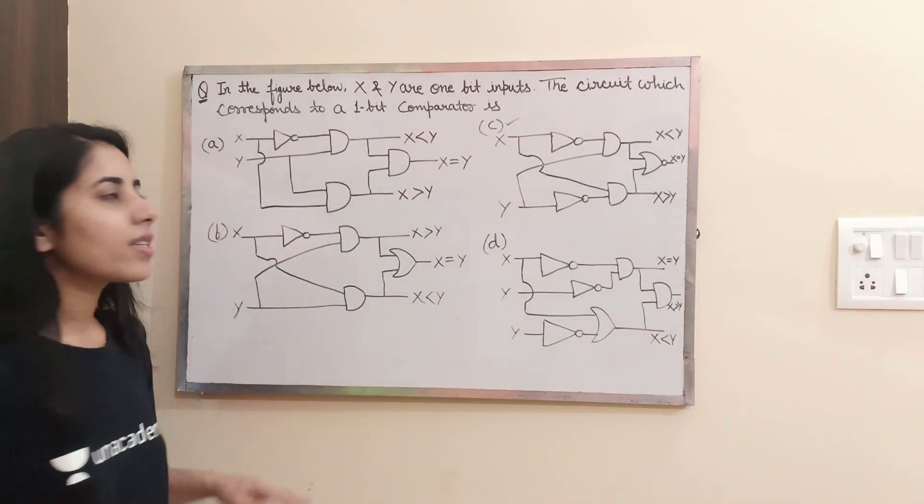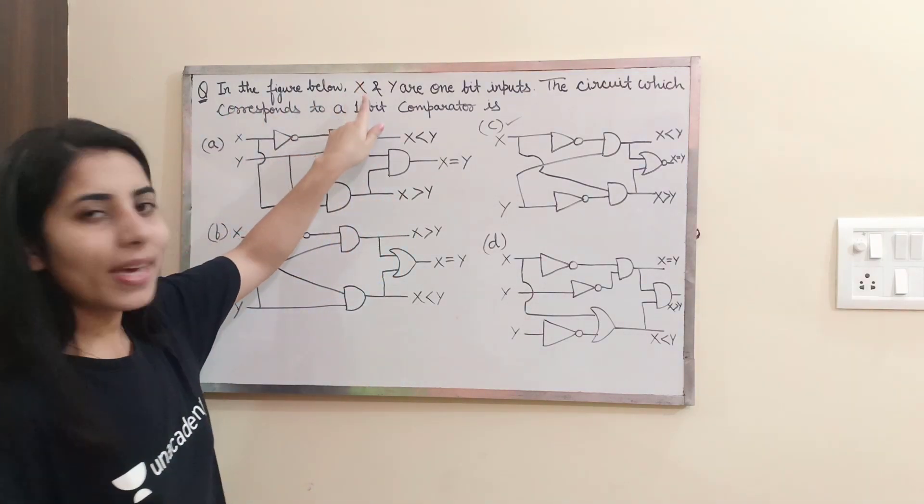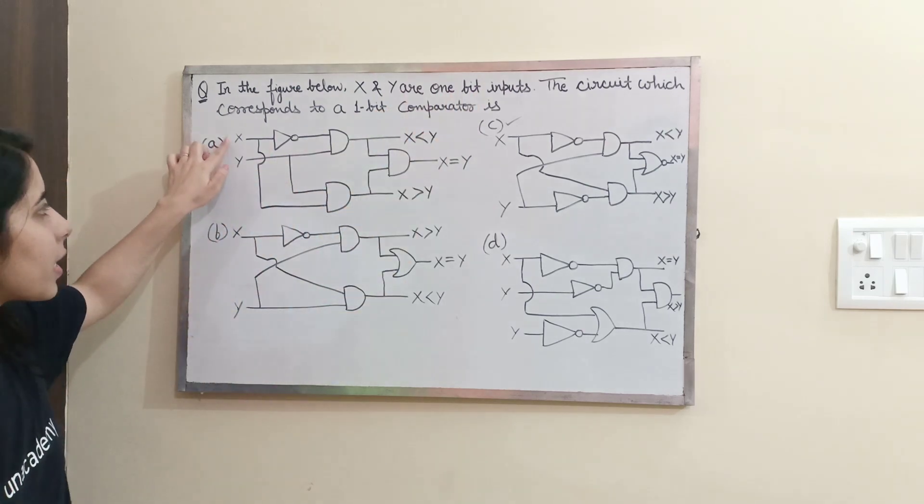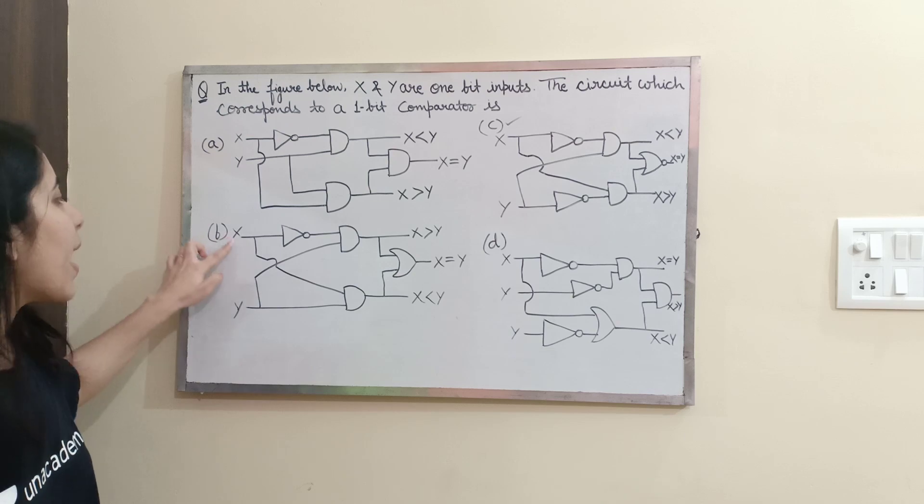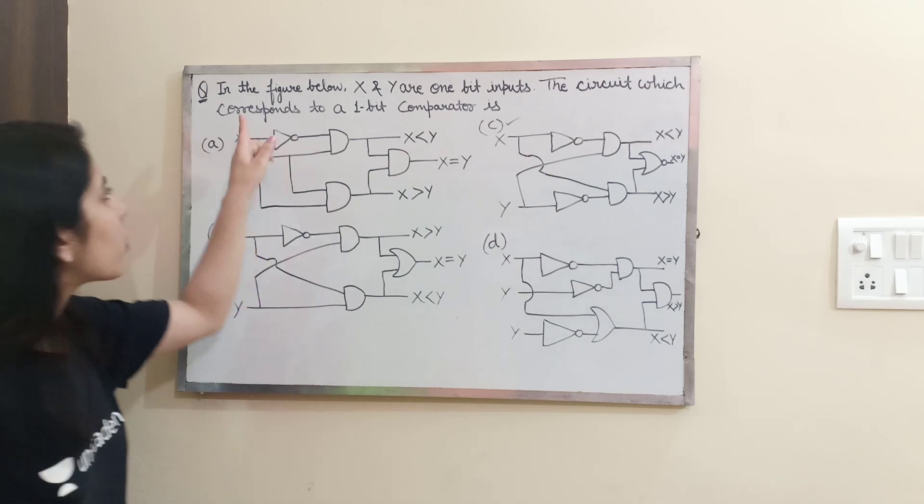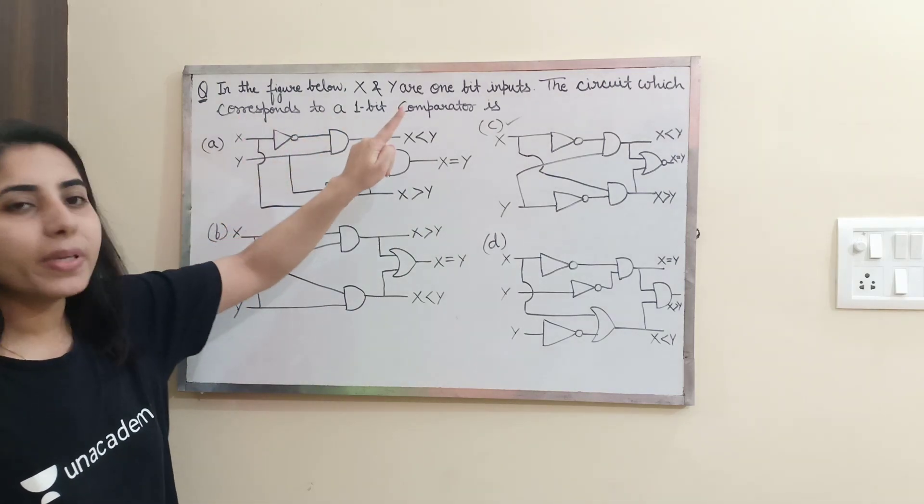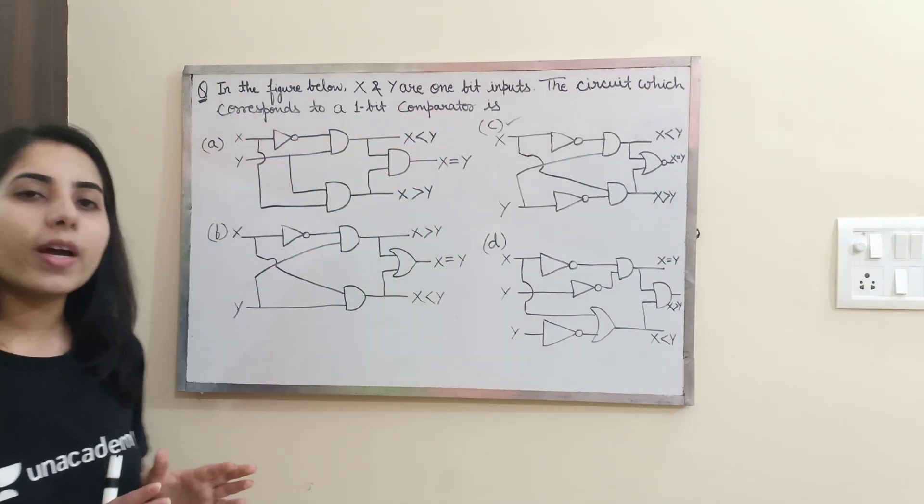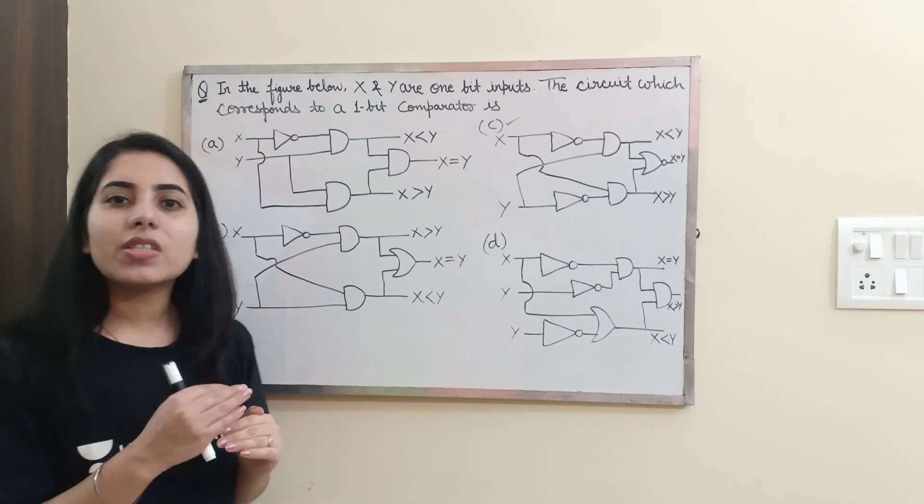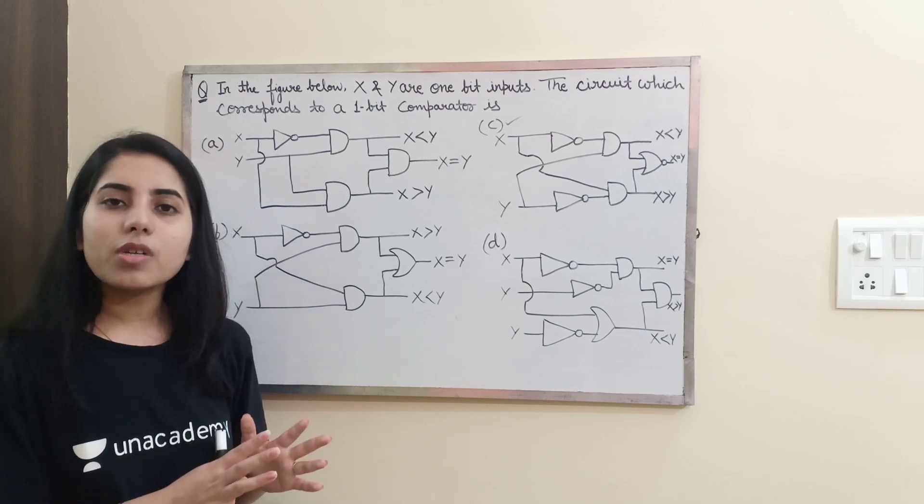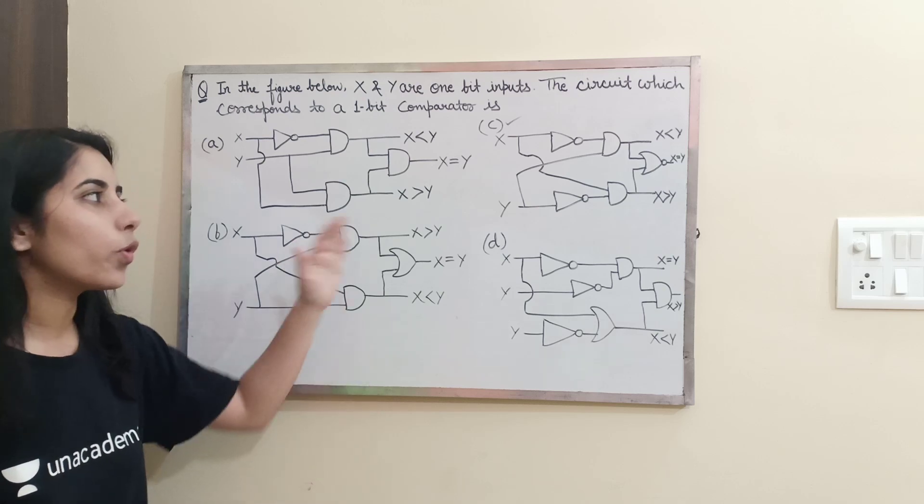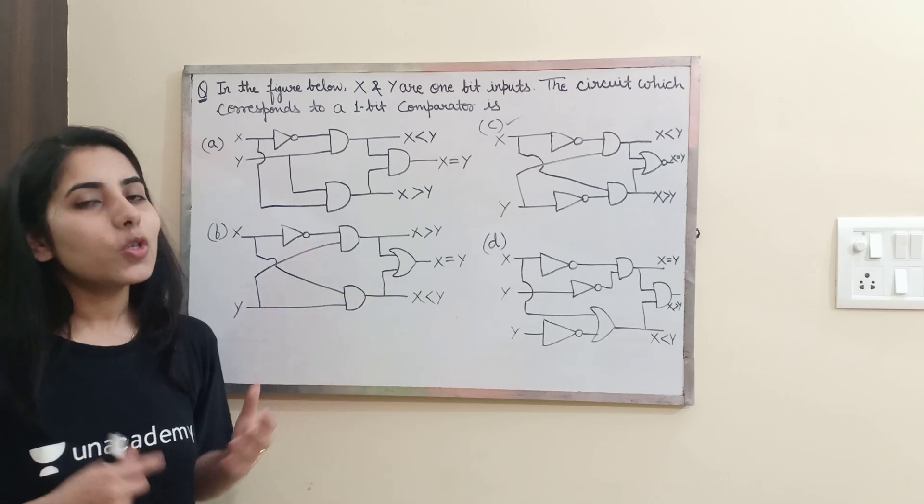The question is: in the figure below X and Y are 1 bit inputs. In all the options you can see X and Y are present there and they are 1 bit inputs. The circuit which corresponds to a 1 bit comparator is. So basically we need to find the circuit which is similar to the comparator circuit, which compares the inputs. Now we are having 4 different circuits given to us. So which one is correct?